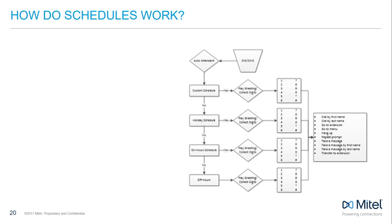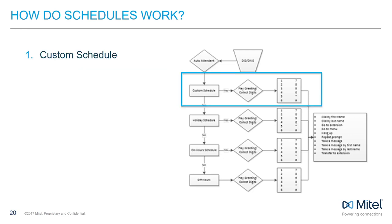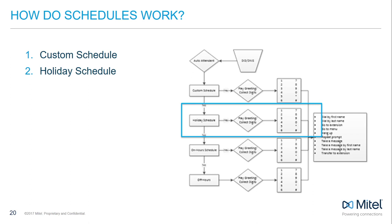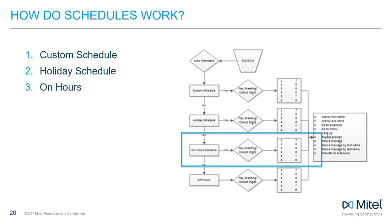Schedules always start with the most detailed schedule and work their way towards the bottom. Custom schedules are at the top of the list with the most specific parameters, including a specific date and time range. Holiday schedules are similar to custom schedules, however they do not contain the time range, only the date in which they should be applied. On-hour schedules are the most commonly applied and used to define the normal business hours for the company.